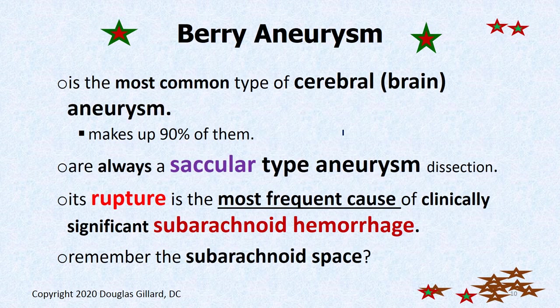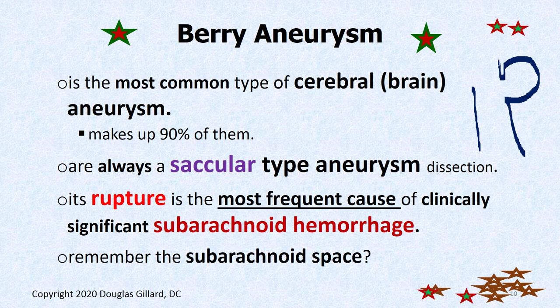Berry aneurysms are the most common type of brain aneurysm — making up about 90% of them. Of the true aneurysms, there's saccular and fusiform. Saccular has one little piece that has herniated way out and looks like a sac. Berry aneurysms are always saccular aneurysms. Fusiform means the whole wall is pushed out uniformly.